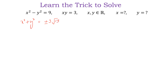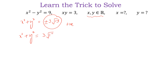We choose the positive value because the negative value gives us an imaginary solution and we need the real solution. So x squared plus y squared is equal to 3 root 13. Let this be equation 1 and the original be equation 2.